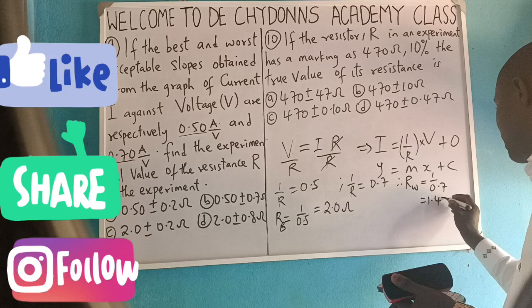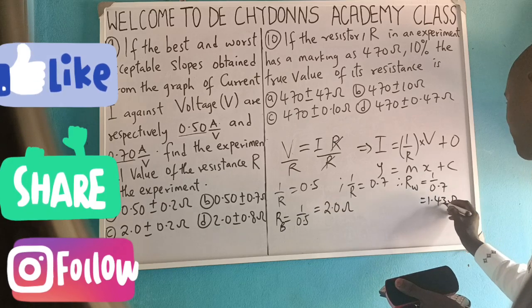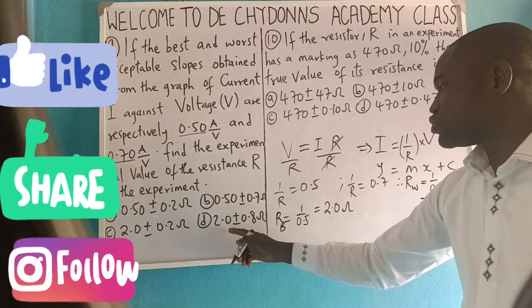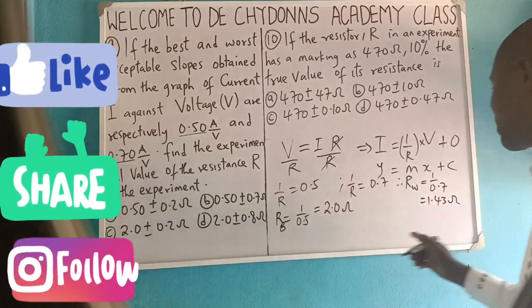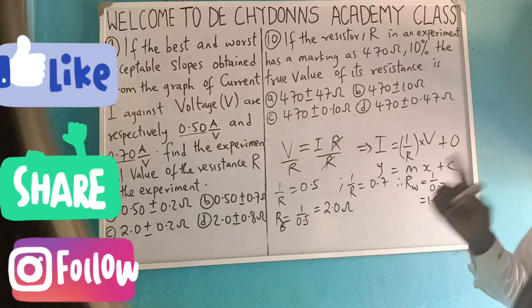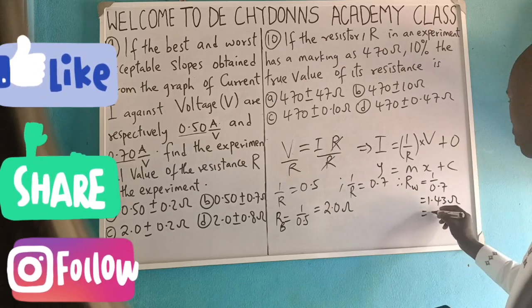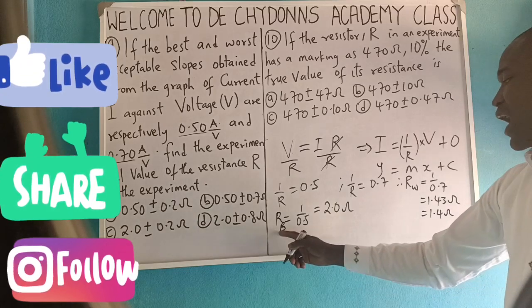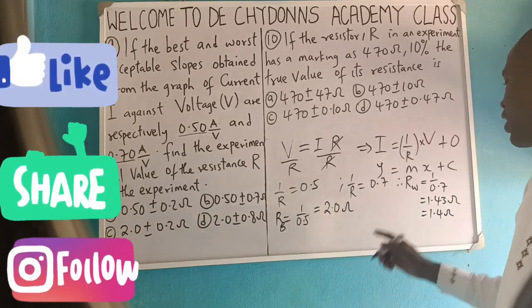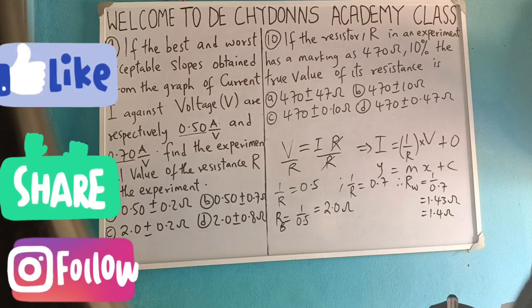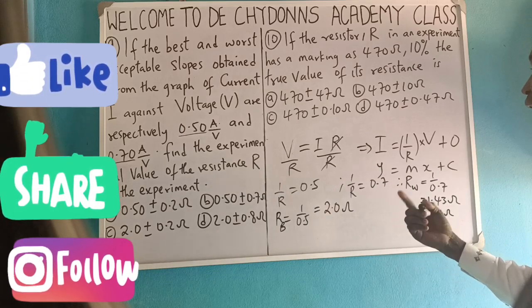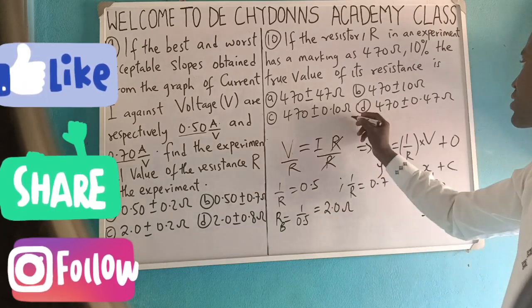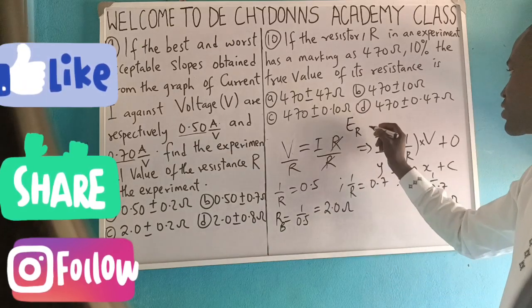Also 1.43 ohms approximately. So because this 2.0 is 1 decimal place, approximating this to 1 decimal place will be equal to 1.4 ohms. So we have gotten our best resistor and the worst ohms. Now, how do we get the error? Error encountered.